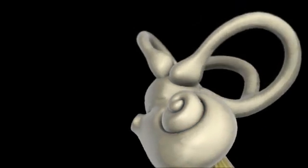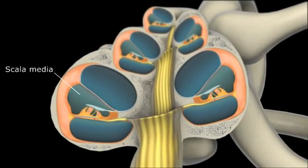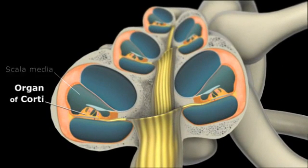In cross-section is the scala media. This houses the organ of Corti, which is referred to as the receptor organ of hearing.